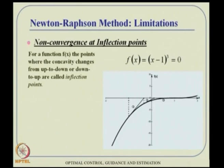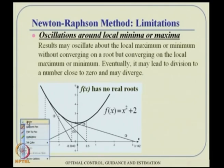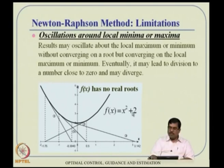A third issue is oscillation: if f(x) has no real roots — not touching the x-axis — starting with any guess leads to oscillation rather than convergence. The method keeps jumping back and forth with no solution found, because you are posing a problem with no solution.